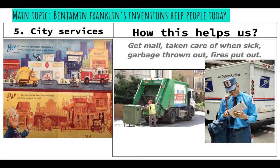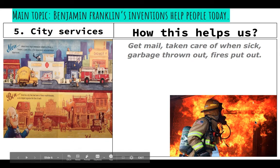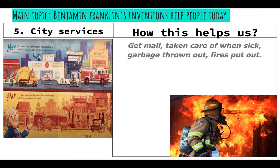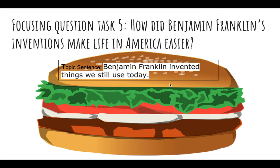Miss G has a garbage truck here — so if you choose 'now garbage is thrown out,' you can draw something like that. For 'now we get mail,' you can draw a post officer putting mail in the mailbox. For 'now fires are put out,' you can draw a fireman putting out a fire. Last year, friends drew beautiful things — they were able to draw Benjamin Franklin doing what he invented. My topic sentence, and yours as well, will be: Benjamin Franklin invented things we still use today.